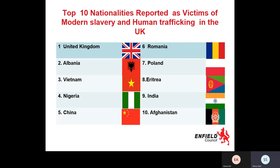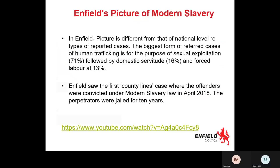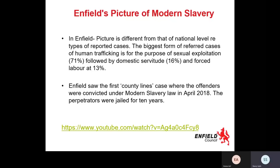Just over half of those individuals were exploited as adults, which unfortunately means 43% were exploited as minors. This affects children in nearly the same way it affects adults. Looking at Enfield's picture specifically, it's slightly different to the national picture. The highest type of exploitation referral in Enfield is sexual exploitation at 71%, followed by domestic servitude at 16% and forced labour at 13%.